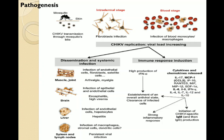Chikungunya virus appears to replicate in fibroblasts, skeletal muscle progenitor cells, and myofibers. The type 1 interferon response seems to play an important role in the host response to chikungunya infection. Host fibroblasts produce type 1 alpha and beta interferon.